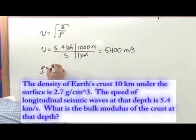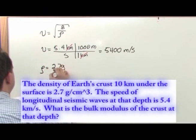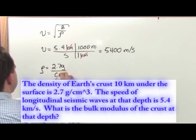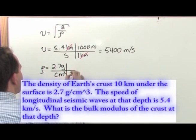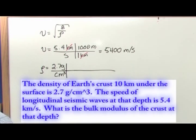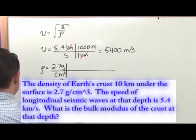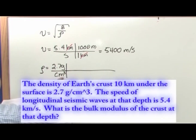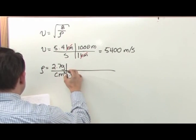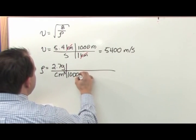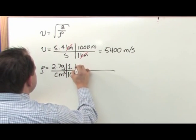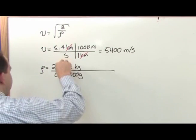The density was likewise given to us as 2.7 grams per cubic centimeter, and you don't want to use that. You always want to work in kilograms per cubic meter. The way to convert grams to kilograms is really simple: 1,000 grams for one kilogram, and that's going to cancel grams with grams.